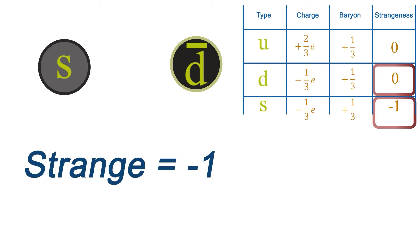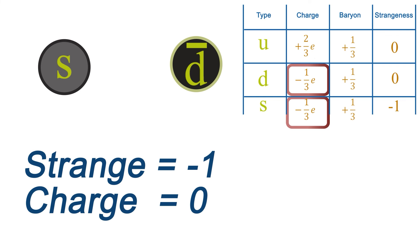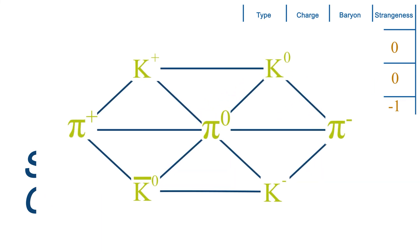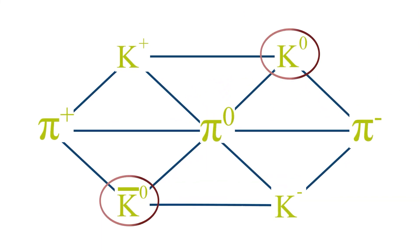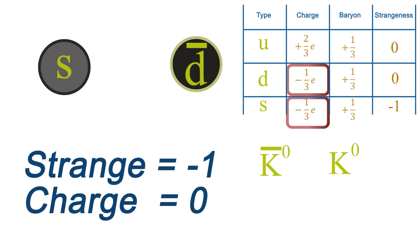What about an s anti-d? Well, this will have a strangeness of minus one, since the d and the anti-d don't have any strangeness, and the charge will be minus one third plus one third, i.e., zero. So this is a K zero. But hang on, there are two of these: there's the K zero and the anti-K zero. So you just have to remember that this is the anti-K zero.